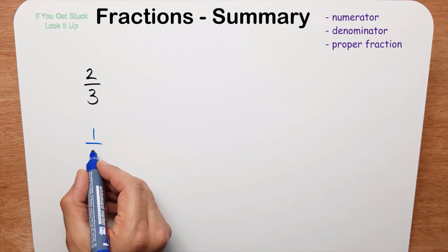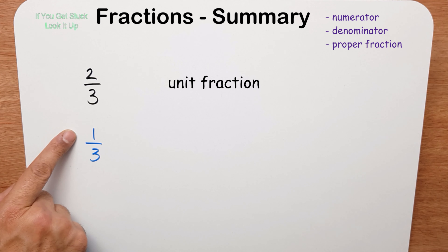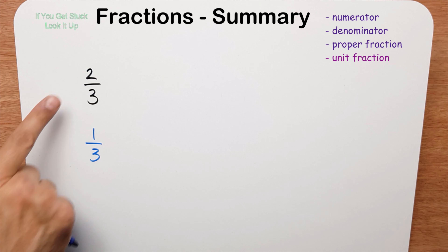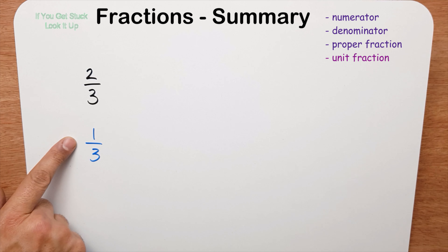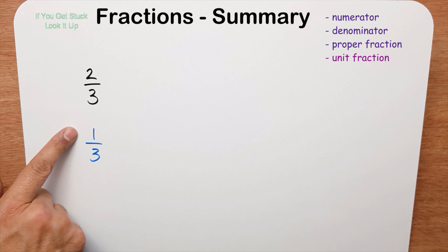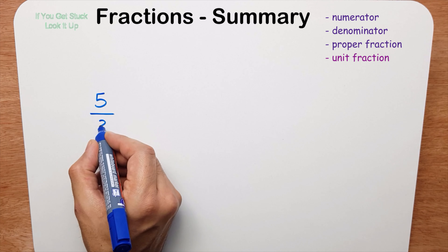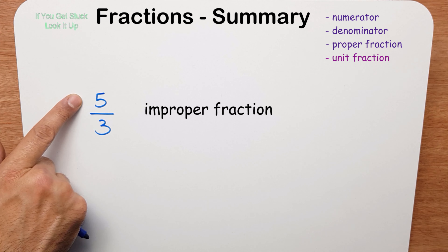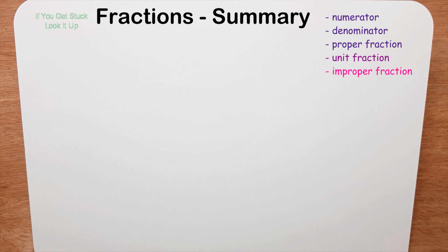This is also a proper fraction: one-third. It's also called a unit fraction because the numerator is one. Now we have five-thirds — this is an improper fraction because the numerator is bigger than the denominator.